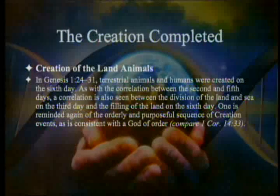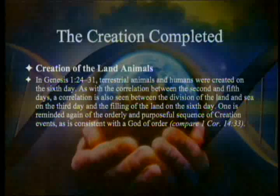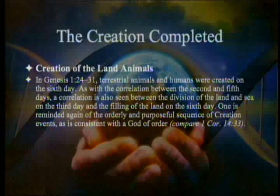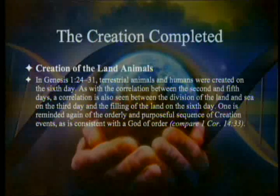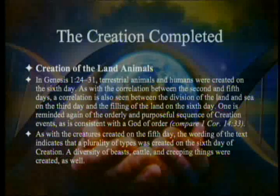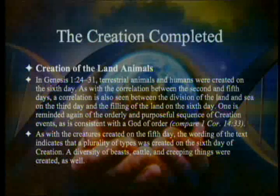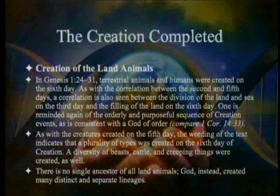In Genesis 1:24–31, terrestrial animals and humans were created on the sixth day. As with the correlation between the second and fifth days, a correlation is also seen between the division of the land and sea on the third day and the filling of the land on the sixth day — one is reminded again of the orderly and purposeful sequence of creation events, consistent with the God of order. The wording indicates that a plurality of types was created on the sixth day: a diversity of beasts, cattle, and creeping things. There is no single ancestor of all land animals — God created many distinct and separate lineages.